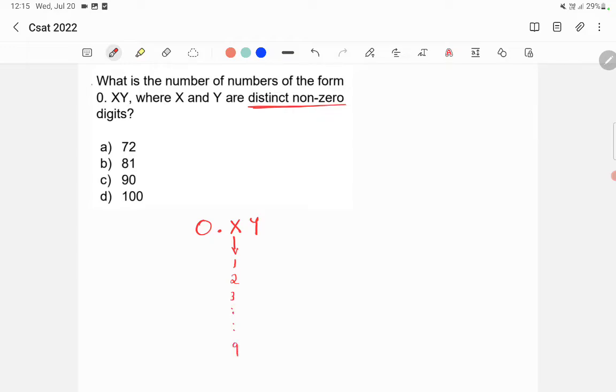Then y can be, if x is 1, then y can be 2 to 9, right? Because y cannot be 1 because x and y are distinct. So they should be different.